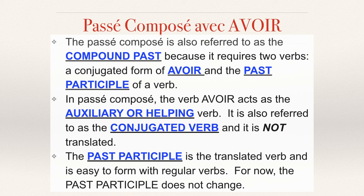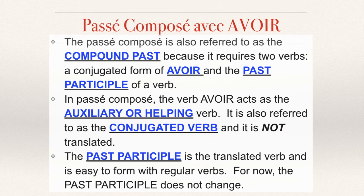So, avoir is your conjugated helping auxiliary verb and the past participle is your translated verb. Two verbs, one tense — passé composé, the compound past.